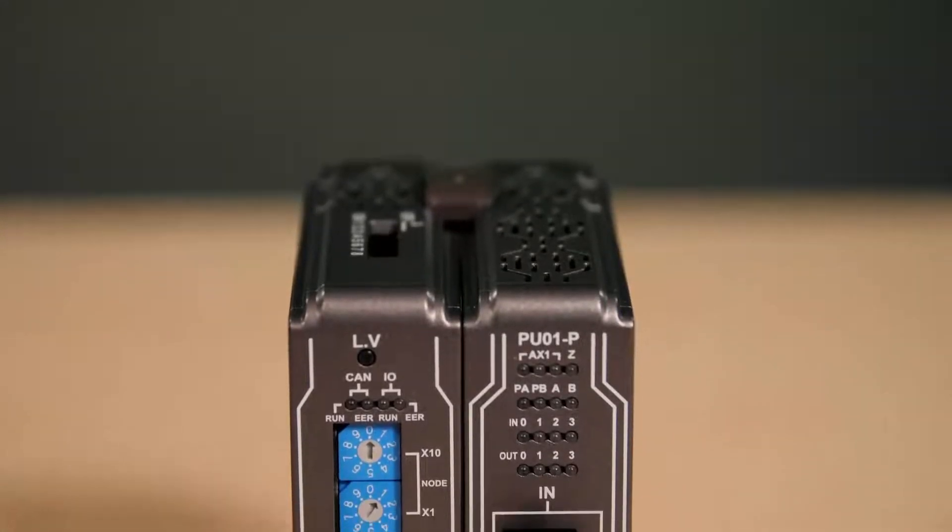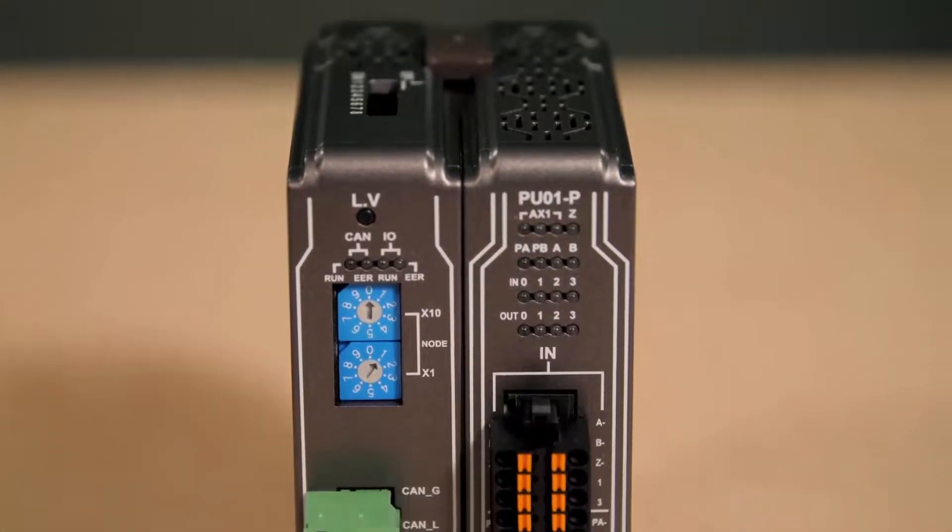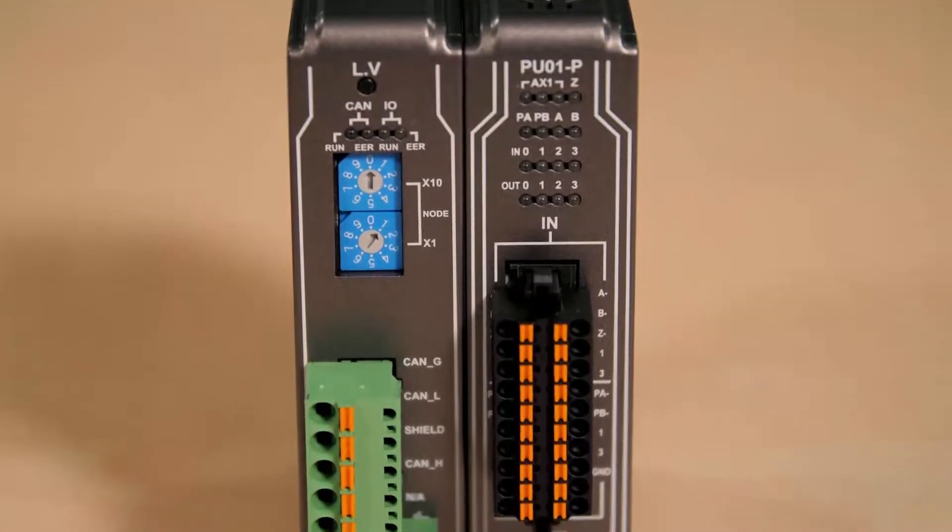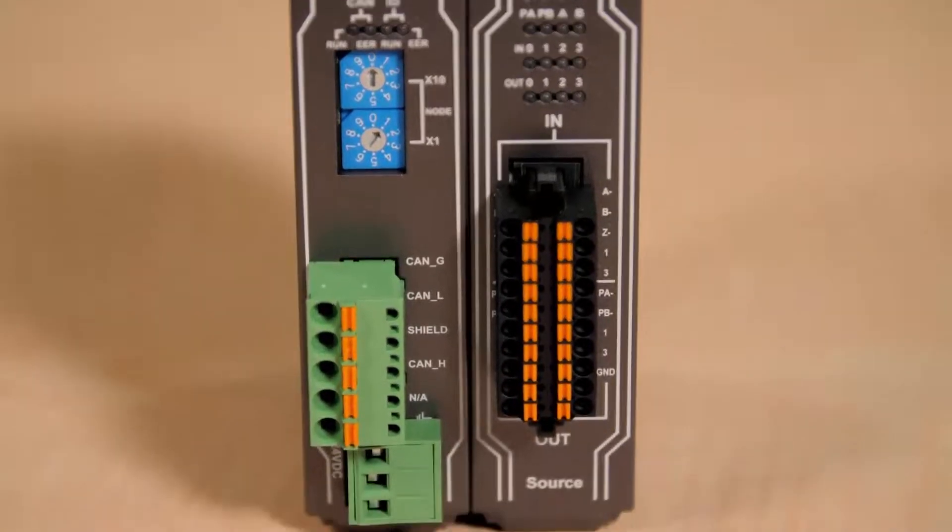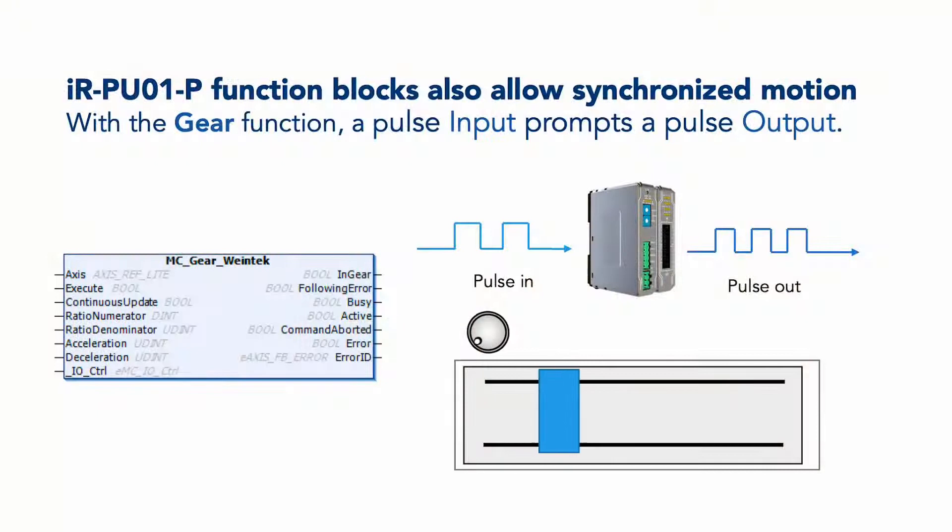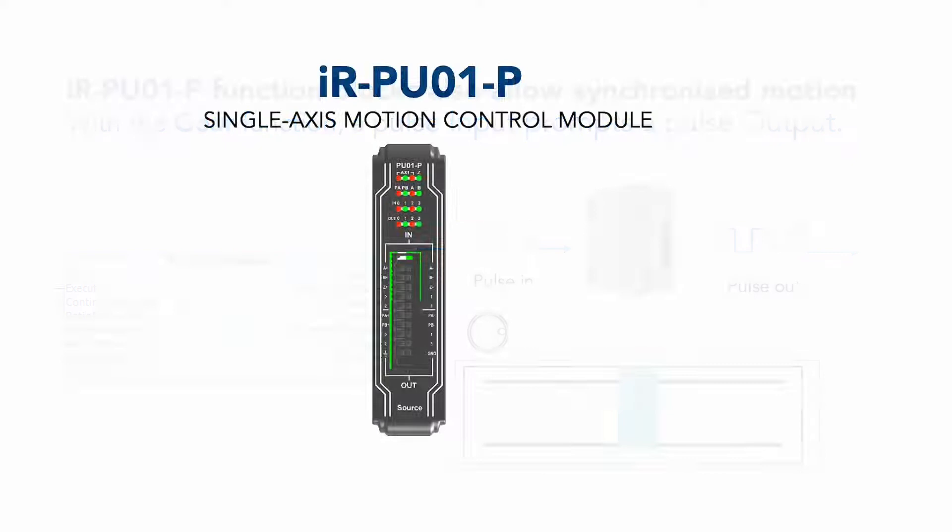The single-axis controller is also capable of synchronized motion control. Here, engineers can specify a ratio between a master-axis pulse input and a slave-axis pulse output, as with a manual pulse generator function, for example.